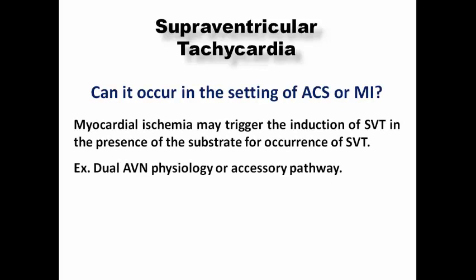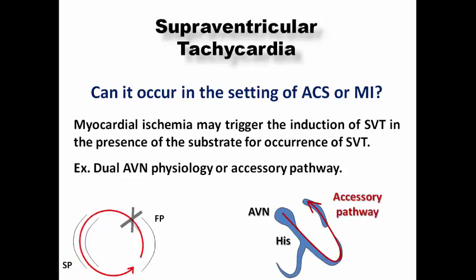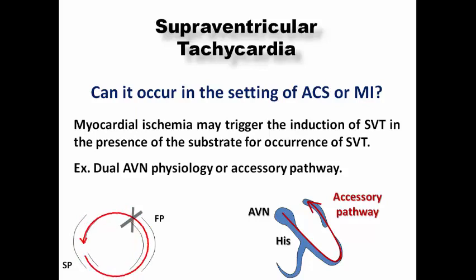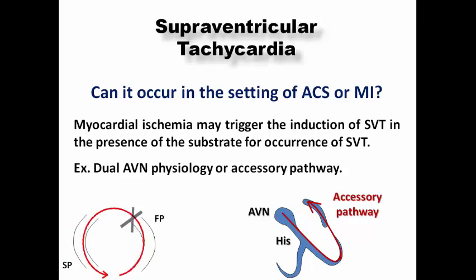Can SVT or atrial flutter appear in the context of myocardial ischemia? Myocardial ischemia may trigger SVT in the presence of a pre-existing substrate — such as dual AV nodal physiology (slow and fast pathways) or an accessory pathway. Ischemia can alter the conduction velocity or refractoriness of these pathways, precipitating SVT. It is not a direct cause but a precipitating one, given the substrate. The same applies to atrial flutter.